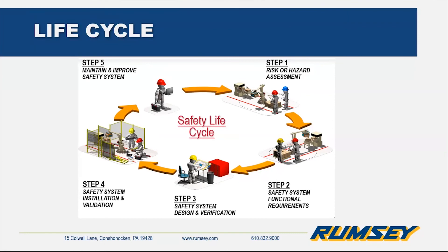Step two, after the hazards are identified, you specify the functional requirements — what do we have to do in order to mitigate these hazards? Step three, you get into the actual design phase, specifically picking out safety products for each hazard, coming up with your wiring diagrams, mechanical drawings, things like that. Step four, you go to the installation and then validation. Once your safety circuit is installed, you need to validate that it's actually going to do what you designed it to do. You open up door one, something happens. You open up door two, something else happens. Or if there's a short circuit fault, how is the safety system going to react?